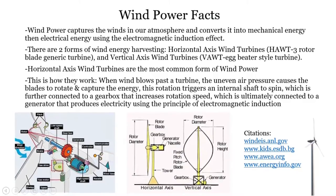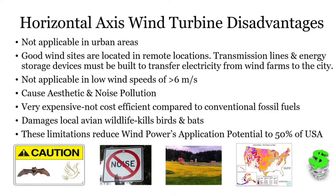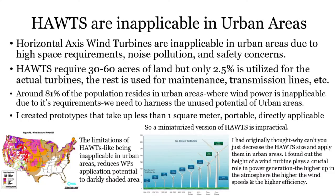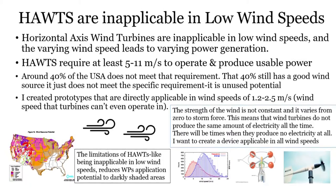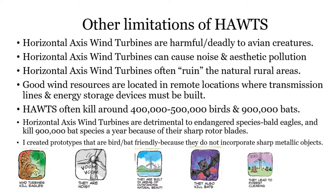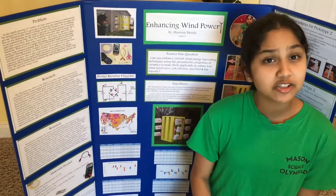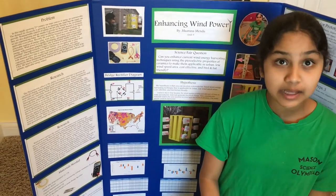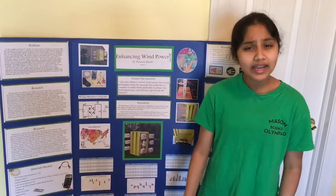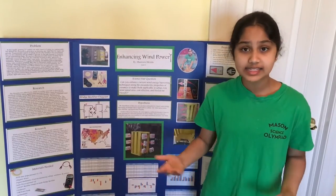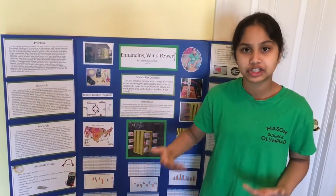Wind power was unable to reach its full potential due to several limitations. For example, horizontal axis wind turbines are inapplicable in urban areas due to high space requirements, safety concerns, and noise pollution. They also require high wind speeds of 5 meters per second to even operate. These limitations reduce wind power's application potential to 50% of the United States. We need to resolve these limitations to make wind power an efficient and globally applicable energy source.